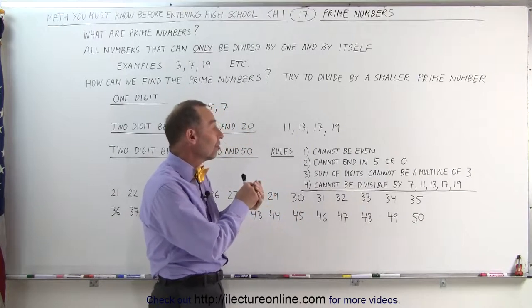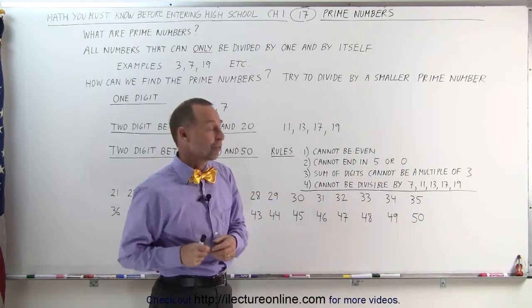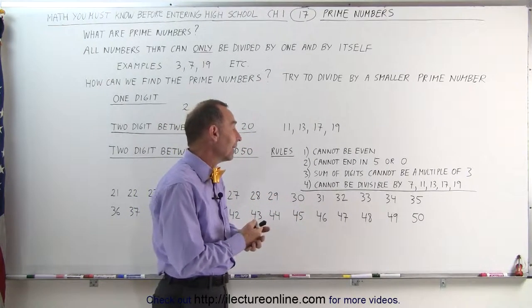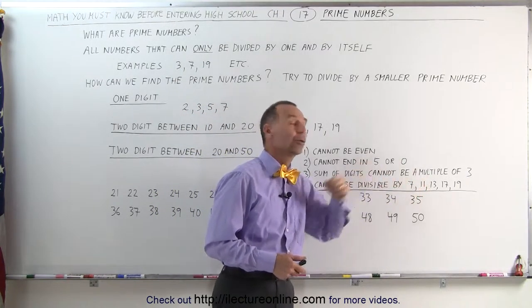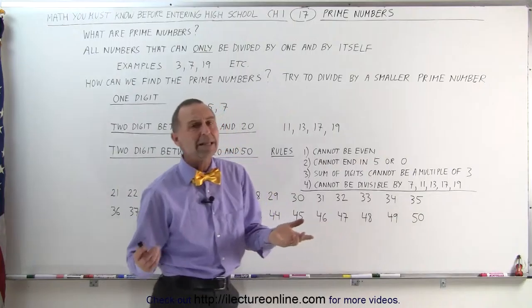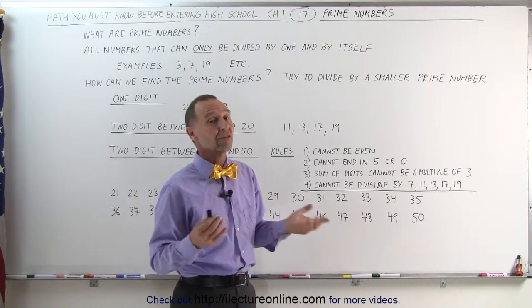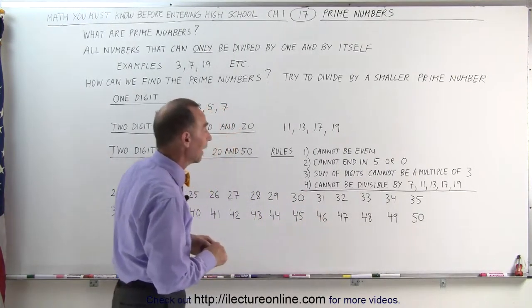The sum of the digits of the number cannot be a multiple of 3. And then finally, it cannot be divisible by smaller prime numbers such as 7, 11, 13, 17, and 19. That may not be as obvious, but sometimes we do need to look at that to see if we're dealing with a prime number or not.